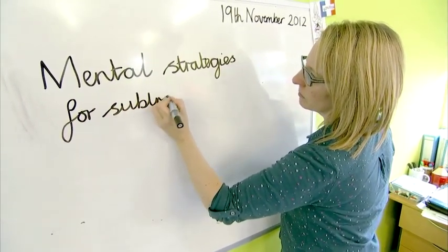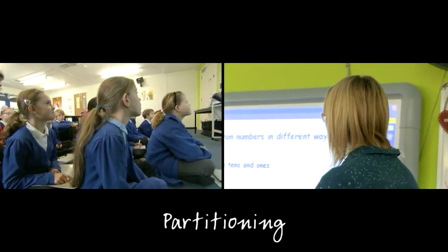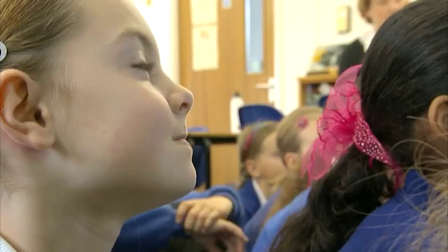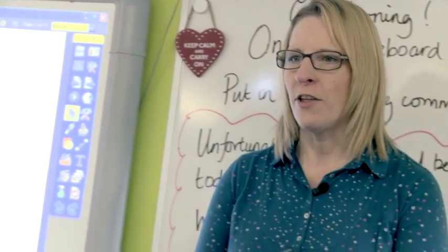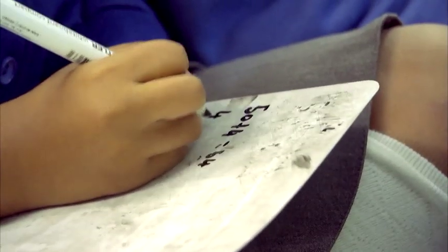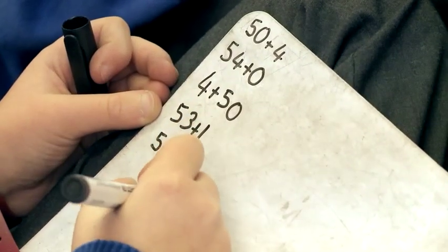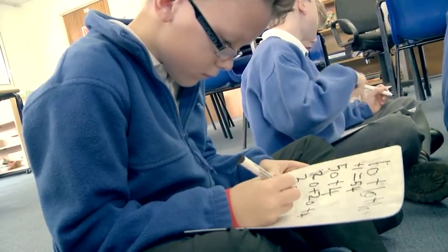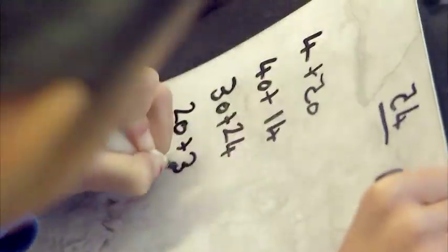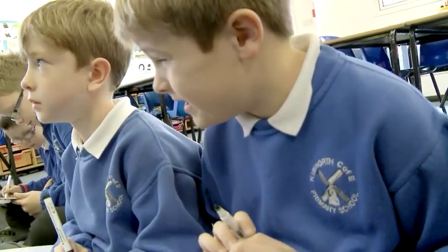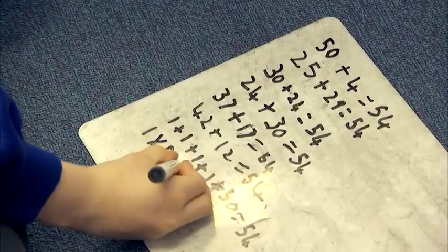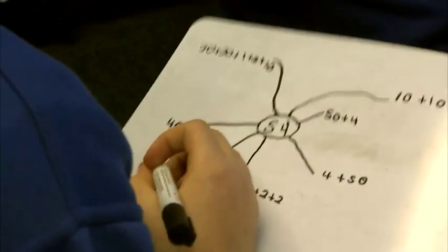Today I'm going to be working with a class of Year 4 children on written and mental subtraction strategies. First we're going to do a mental starter which will be useful to those doing the written strategy later. How many possible ways do you think you can partition the number 54? To be successful with written algorithms for subtraction and division especially, they need to be able to partition in different ways, and I think it's important that as young as possible we are teaching children that skill.